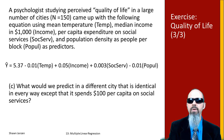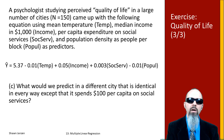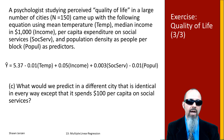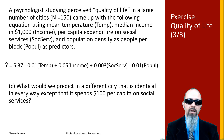Now let's spin this up a little bit. How would we look at a different city that is identical to the first in every way, except that it spends $100 per capita on social services? The first city had a mean temperature of 55 degrees, a median income of $12,000, and a population density of 200 people per block — only the social service spending differs.